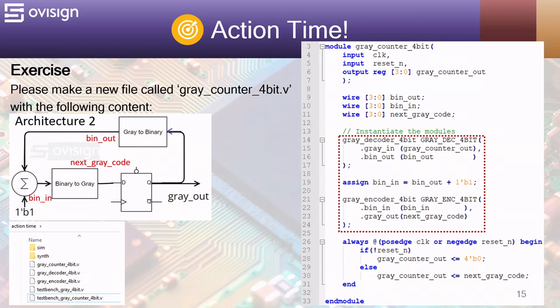For this project you are going to need the following Verilog files: gray_counter_4bit.v, gray_decoder_4bit.v, gray_encoder_4bit.v, and testbench_gray_counter_4bit.v. Testbench_gray_4bit.v is optional and is used to test only the gray encoders.